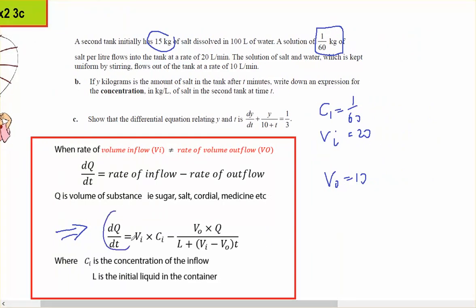So dy/dt in this case is going to equal volume in times concentration in, 20 times 1/60, minus volume out which is 10, q in our case is y, over 100 plus 10t.